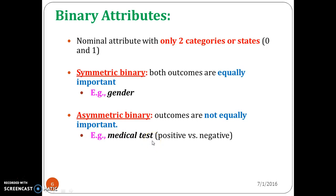For example, consider the gender of a person. The gender of a person can be either male or female. The ratio of occurrence of male and female is equal — you cannot say every person is female or every person is male. Hence, gender is a symmetric binary attribute.